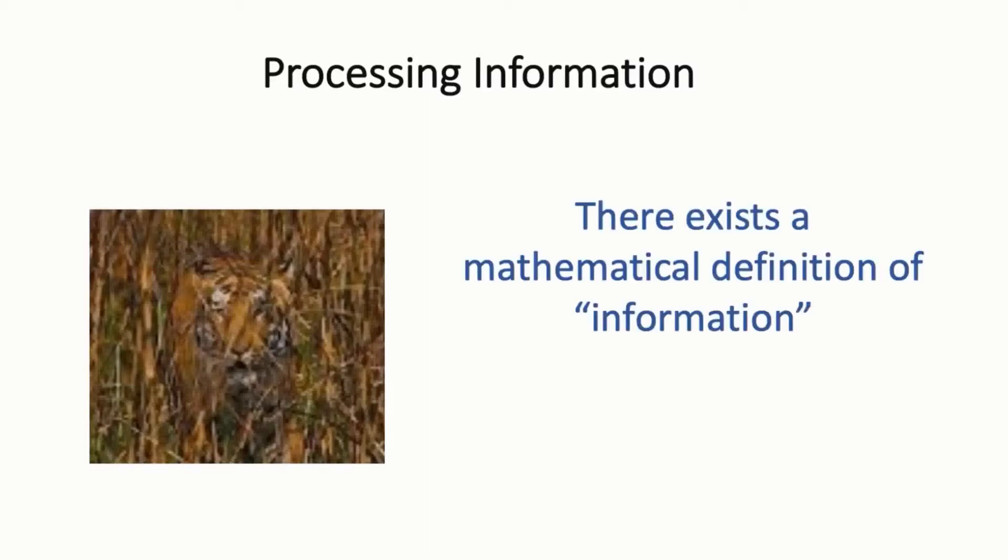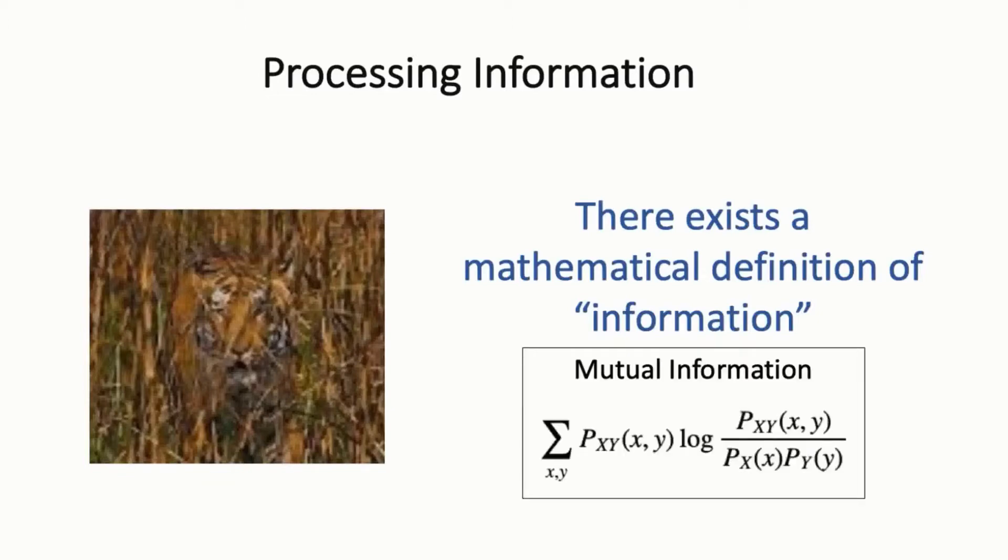Well, there's a mathematically precise definition of what information means and what it means to transfer information between two entities. And this is from information theory, and it's called Shannon's Mutual Information. But because this is a course on deep learning, and not a course on information theory, I'm not going to go into the math of information theory.